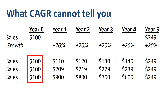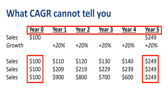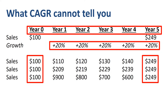CAGR takes the starting point, the ending point, and the number of increments from start to end, and returns a constant rate of return based on those variables.